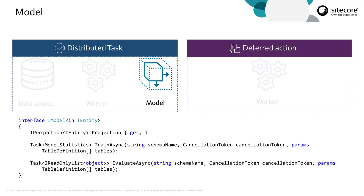And then we have the iModel. The iModel is much more complex. The model here is a ML model, as opposed to an XConnect domain model. So we have members on this interface which are geared towards ML tasks. The projection property is used to project data — projection in ML is a common task used for extracting data in one format and transforming it into a different format. Many different ML algorithms expect the data in a specific format, so projection becomes quite important. There are also two methods: trainAsync and evaluateAsync. The first is to train an ML model, and the second is to evaluate against that trained model. The interface is also generic, so the type passed in should match the type that the data source emitted and the worker has processed.